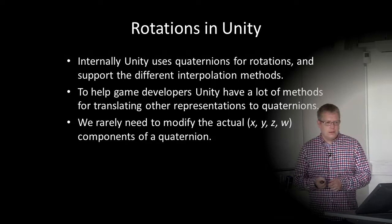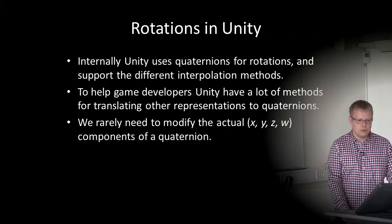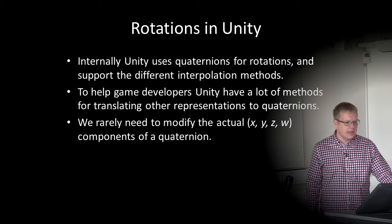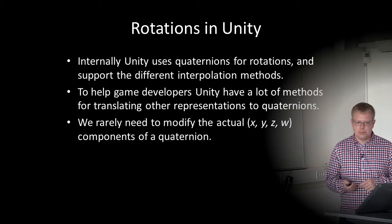Unity internally uses quaternions for rotations and supports the different interpolation methods. To help game developers, Unity has many methods for translating other representations to quaternions — for example, Euler angles. So we rarely need to modify the actual X, Y, Z, and W components of a quaternion directly.